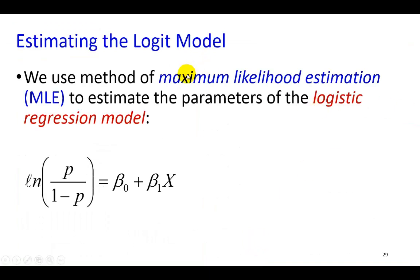Now, we use the method of maximum likelihood estimation to obtain the parameters, parameter estimates of the logistic function, which are the intercept and this coefficient, β₁. The method of maximum likelihood, as you may know, is one where you look for the parameter values that maximize the likelihood of obtaining the observations with which you're working.